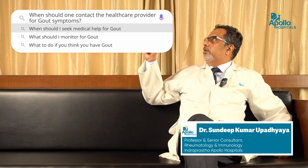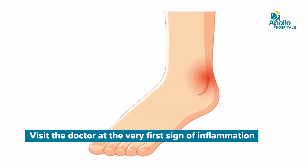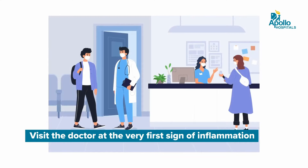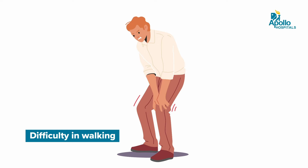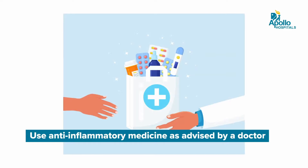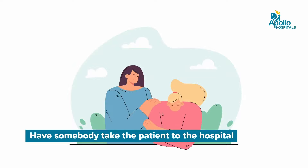When should one contact the healthcare provider for gout symptoms? The patient is encouraged to call the healthcare provider at the first sign of inflammation and pain, when still mobile enough to walk or drive to the clinic. Delaying until it is impossible to even get up and walk to the toilet is too late for gout treatment. At the first sign of inflammation and pain, either use an anti-inflammatory as advised by the doctor, or have someone take the patient to the doctor to get the right treatment.